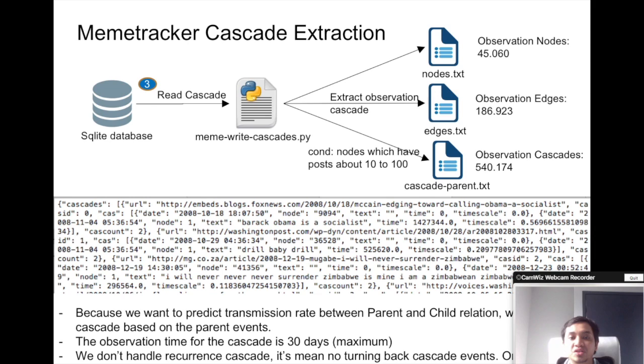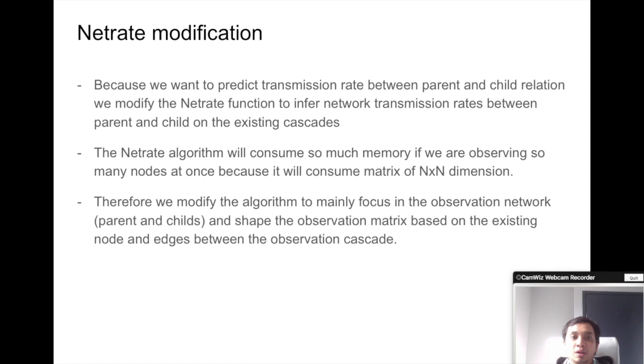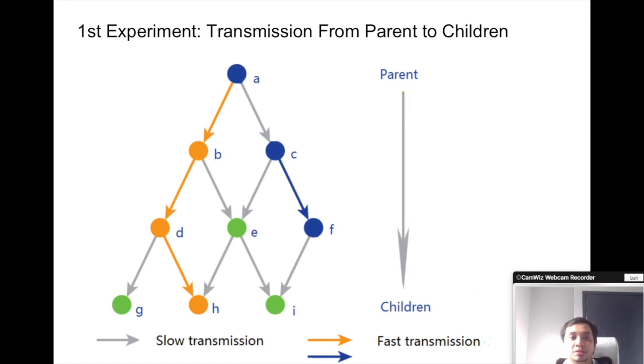After we ingest the dataset, we extract the dataset to get our observation cascades. However, we can't use the NetTRAP algorithm for this dataset because the observation nodes are very big. So we modify the NetTRAP to focus on our observation network only, which is parent and child relation.